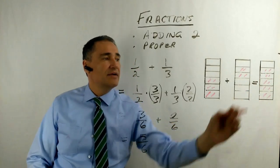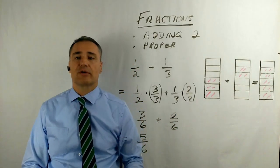1, 2, 3, 4, 5. That's 5 out of 6. 5 over 6 is the correct answer.